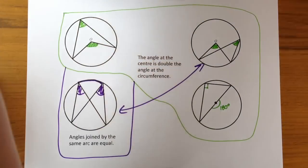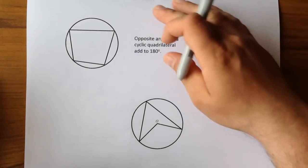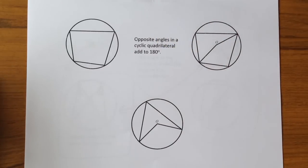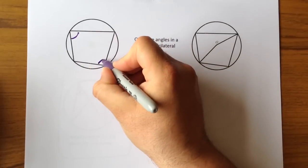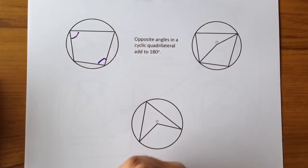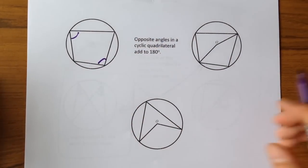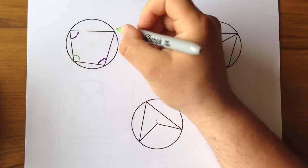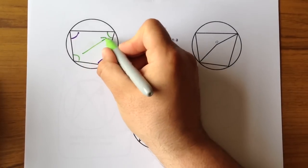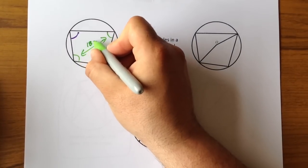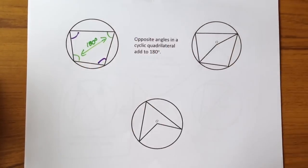The next one is opposite angles in a cyclic quadrilateral add to 180 degrees. So that angle and that angle add up to 180 degrees, and that angle and that angle add to 180 degrees.